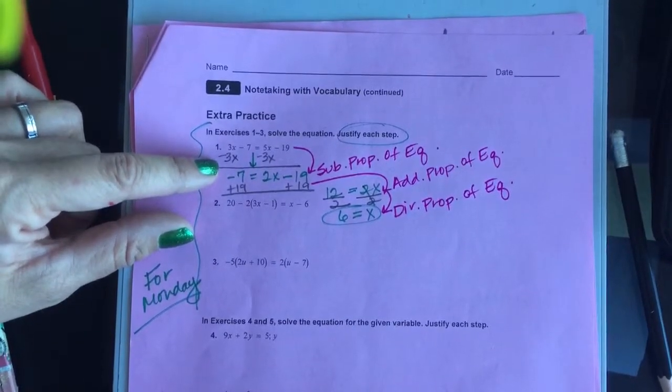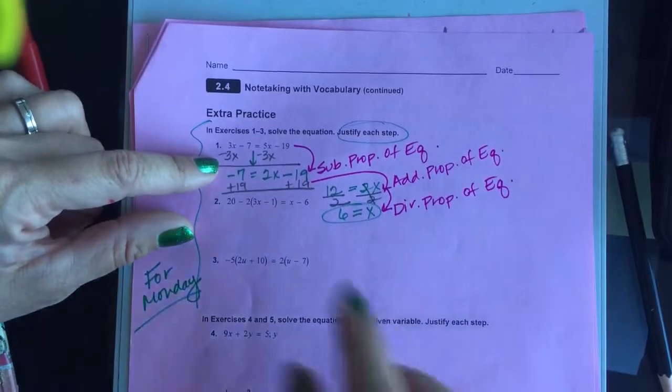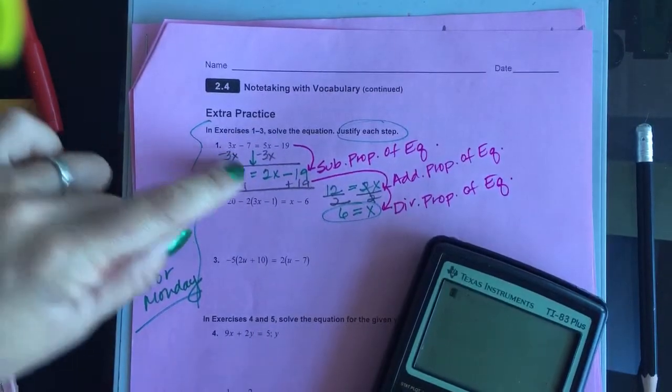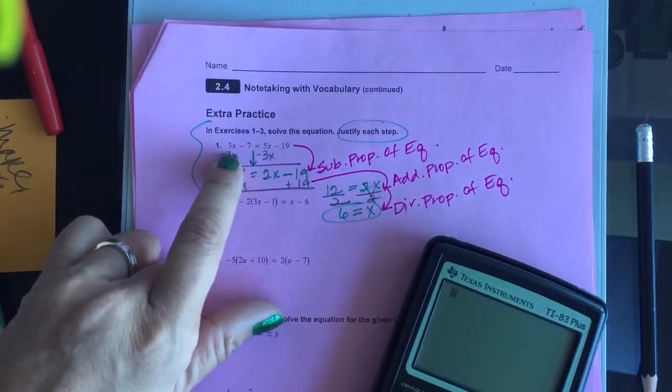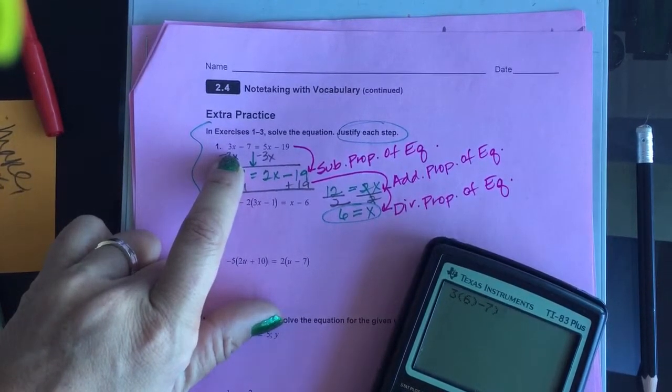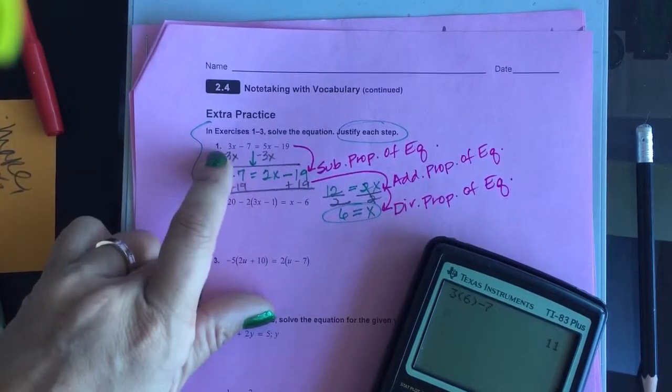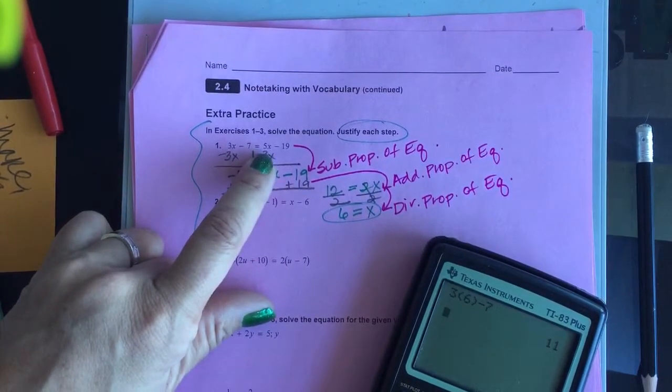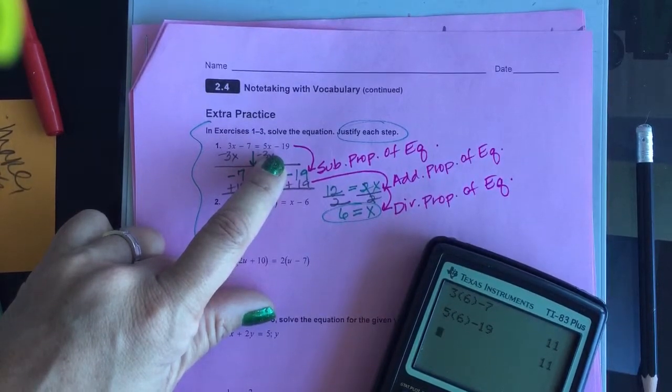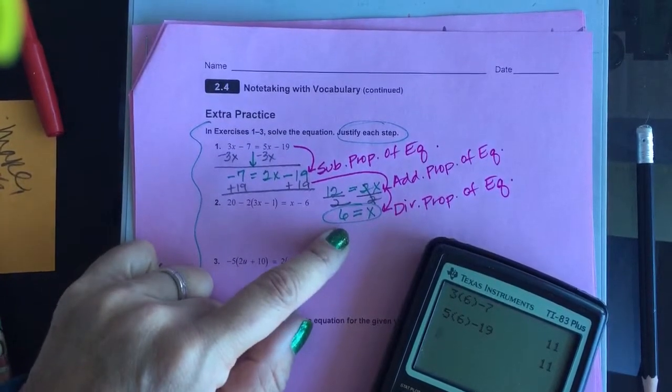But let's use, thanks for the reminder. Substitution looks like this. I go back and I say, what is 3 times, I actually put 6 in. So 3 times 6 minus 7, that gave me 11 on the left-hand side. That's substitution right there. 5 times 6 minus 19 on the right-hand side gave me 11.